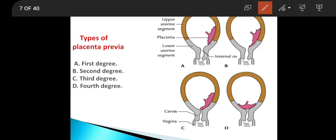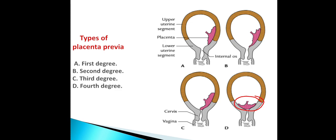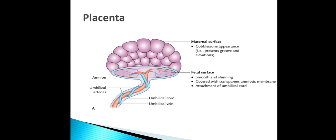In the fourth degree there are no chances of normal delivery because the placenta is covering the internal os completely, so we have to perform a caesarean section in this condition.